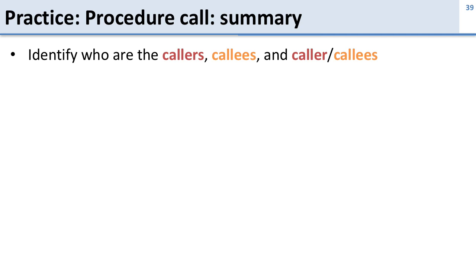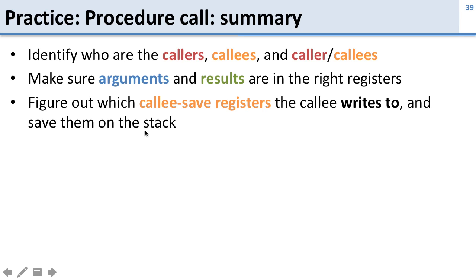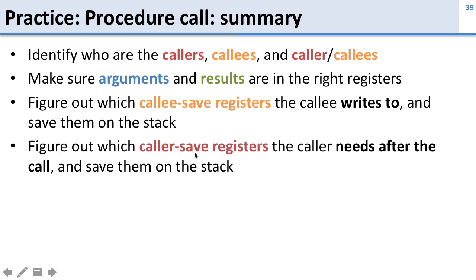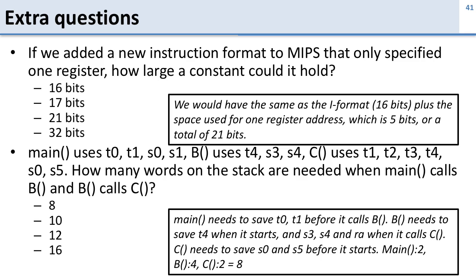To summarize what we did: first, we identified which functions are callers, callees, or both — important for knowing what needs saving. Then we ensured arguments and results were in the correct registers. Then we identified all callee-save registers that are written to and saved them, since writing them could corrupt the caller's values. Finally, we looked at caller-save registers and saved them only when their values were needed after a call, since a called function may overwrite them.